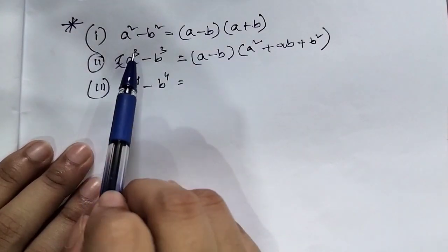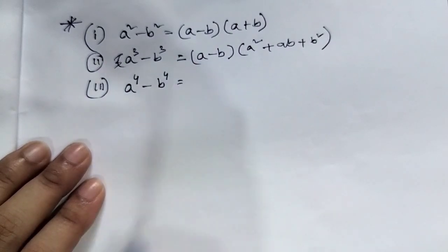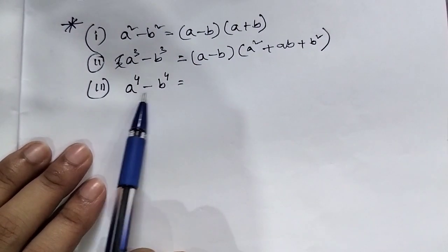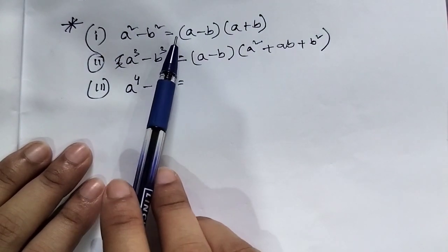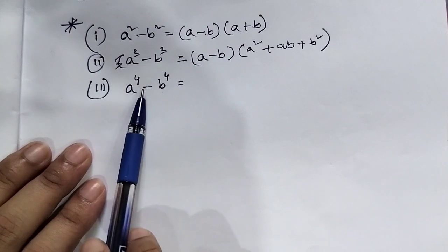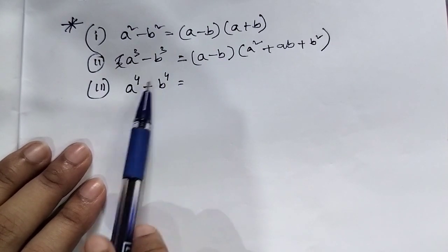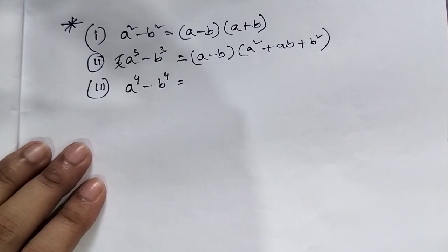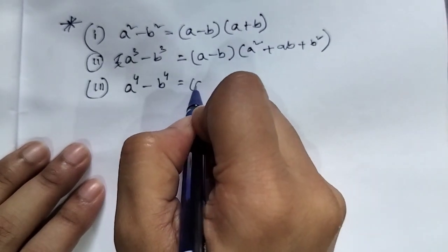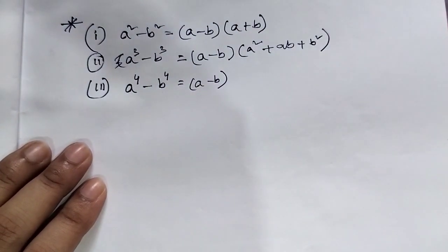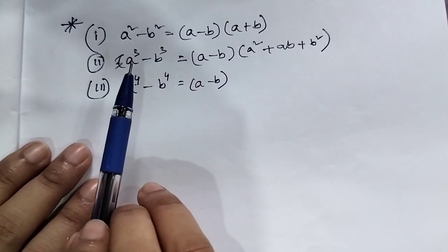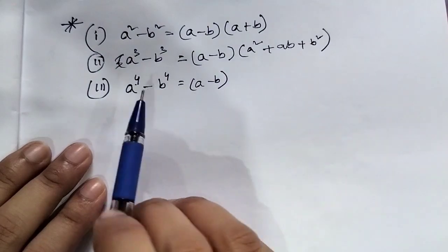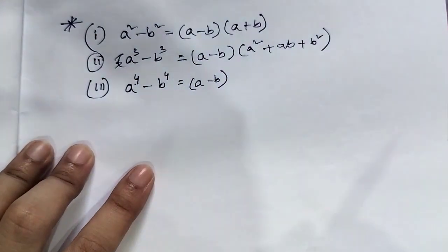Now consider a to the power 4 minus b to the power 4. The general pattern is a to the power n minus b to the power n. Moving to a minus b to the power 5, 6, and 2 to the power 6 as further examples.